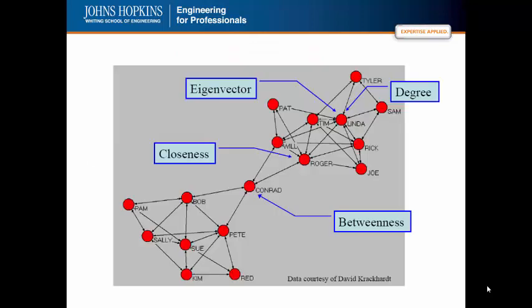As review, we are using Dave Krackhart's data set to highlight the difference between the four centrality measures. Linda is high in degree because she has more connections than any of the other nodes in the network. Roger has higher closeness centrality because the average distance between Roger and all other nodes in the network is the shortest because he is one degree closer to this cluster down here.